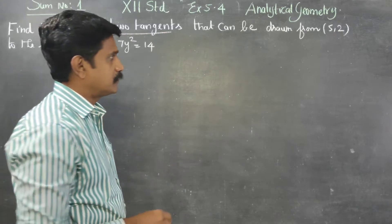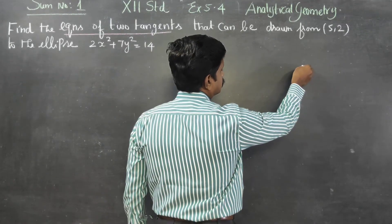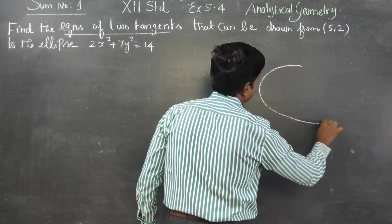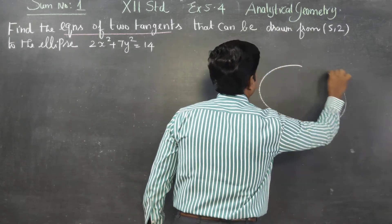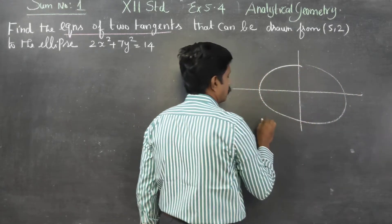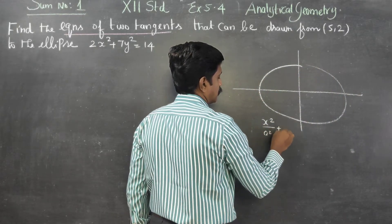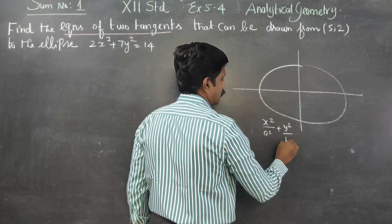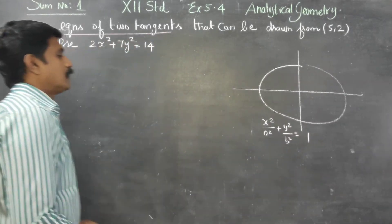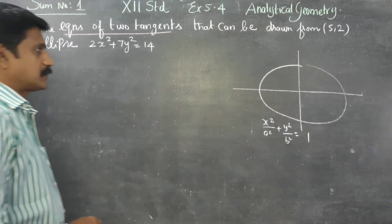Before entering into this sum, some basic ideas about tangent. Let the ellipse be x²/a² plus y²/b² is equal to 1.